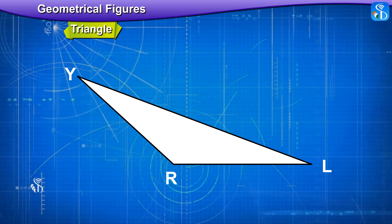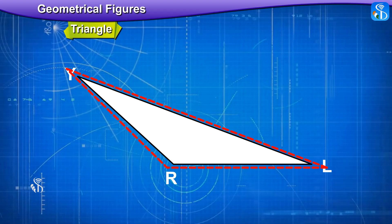In this triangle, Y, R, and L are the 3 vertices. Side YR, side RL, and side LY are the 3 sides of the triangle.